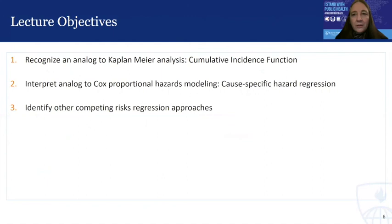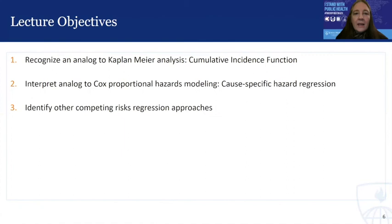With that introduction, here are our lecture objectives for the rest of this brief module. First, to recognize an analog to Kaplan-Meier analysis appropriate in the competing risk setting — that is, to estimate the cumulative incidence function, defined differently than in the standard survival setting. Second, to interpret an analog to the Cox proportional hazards model, which is cause-specific hazard regression. And finally, at a high level, to identify a few other competing risk regression approaches beyond cause-specific hazard modeling.